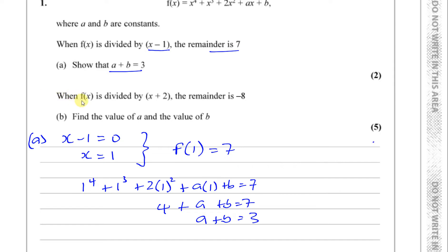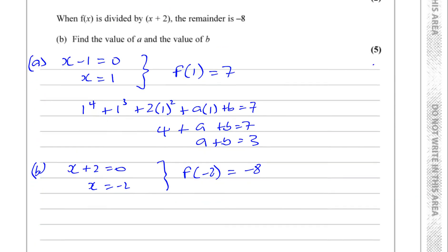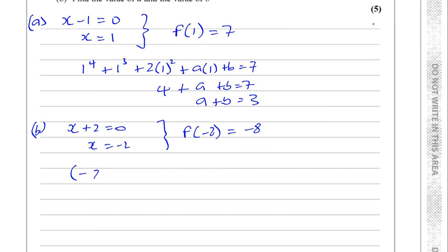Part (b) says when f(x) is divided by x plus 2, the remainder is minus 8. Setting x plus 2 equal to 0 gives x equals negative 2. That means f(negative 2) will give you negative 8. So we substitute x equals negative 2: minus 2 to the power of 4, plus minus 2 to the power of 3, plus 2 times minus 2 squared, plus a times minus 2, plus b, all equals minus 8.